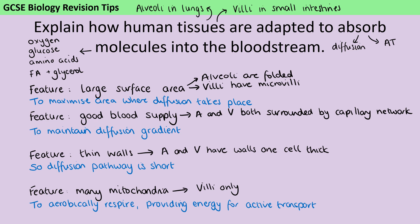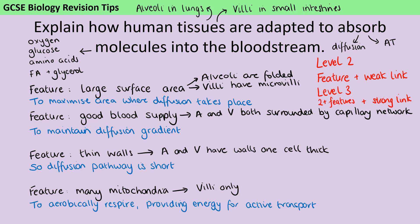If all you've done is name the different features — large surface area, good blood supply, thin walls and many mitochondria — you're probably going to be capped at two marks with a level one answer. In order to get into level two and get three or four marks, you need to link this with more information, for instance saying the alveoli have a large surface area because they have a very folded shape. In order to get to level three and get five or six marks, you're going to need a minimum of two different features and a really strong link — not just talking about how the folded shape increases the surface area, but going on to say that this maximises the area where diffusion takes place.